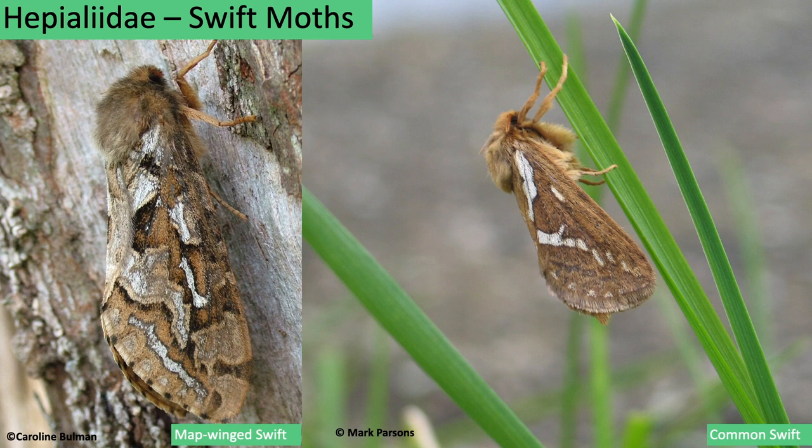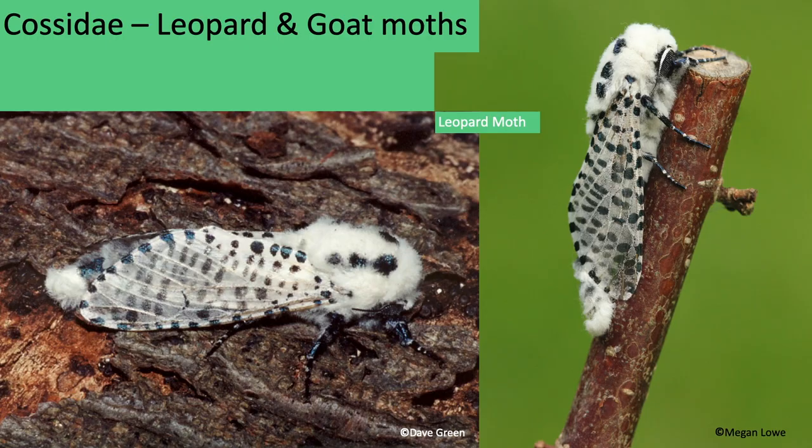Swift moths — there are five species in the UK. They have elongated wings that are held almost vertically against the body when at rest, and they have really short antennae and tend to fly at dusk until full darkness.